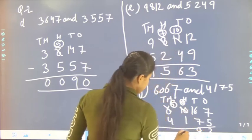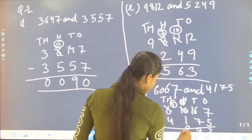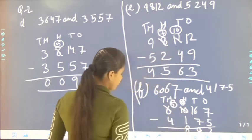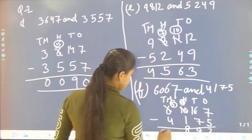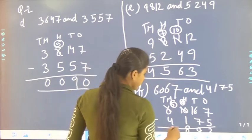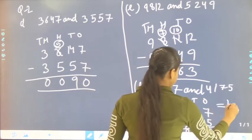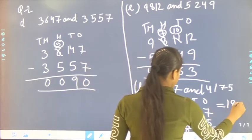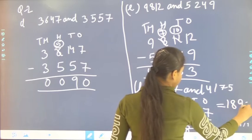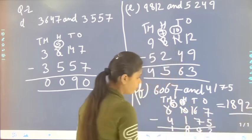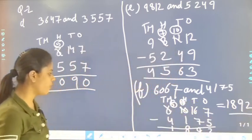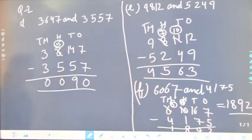9 minus 1, it will be 8. 5 minus 4, it will be 1. So the answer is 1,892. If you want to take a screenshot, you can take.